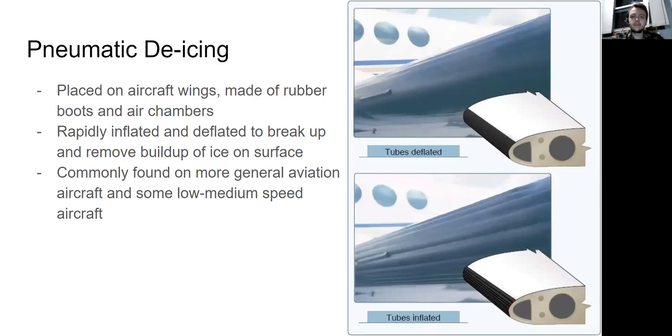Pneumatic de-icing are these little rubber pieces that are placed on aircraft wings or various aerodynamic surfaces made of rubber boots and air chambers. And these are rapidly inflated and deflated to break up and remove buildup of ice on the surface. So this is a de-icing method. As you can see here, the tubes are deflated, creating a normal surface. And then when the tubes are inflated, you can see that when they're rapidly inflated and deflated, it will break up the ice on that leading edge of the wing. These are more commonly found on general aviation aircraft and some low to medium speed aircraft. They're not usually found on bigger aircraft or jet airliners because they're more hard to implement and less useful as the aircraft aerodynamic surfaces get bigger.